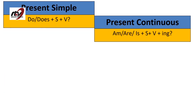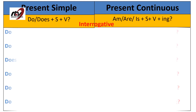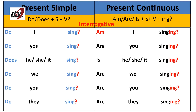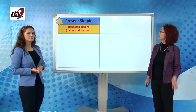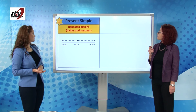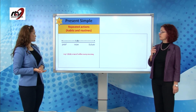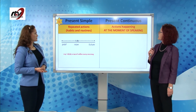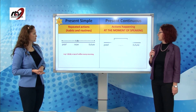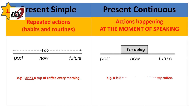Present simple and continuous in the interrogative: Do you sing? Is this a habit of yours? Is she singing? I can't hear very well. Use one: present simple is used for repeated actions — a habit or routine. I drink a cup of coffee every morning. Whereas present continuous is for actions happening now, at the moment of speaking. It's 8am and I'm drinking my coffee now.